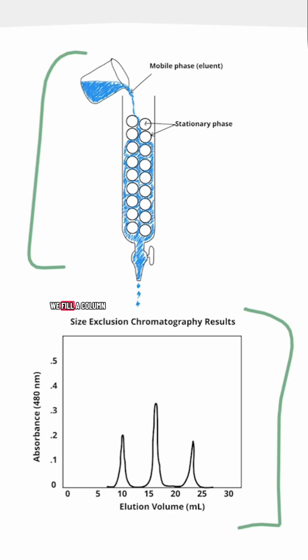In column chromatography, we fill a column, which is this container right here that has a spout at the end, and we fill this column with a bunch of beads as shown by the circles there.